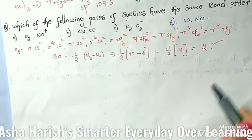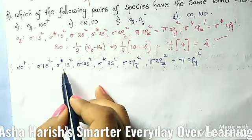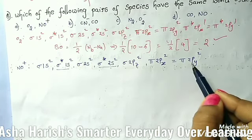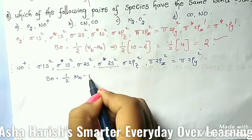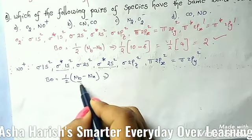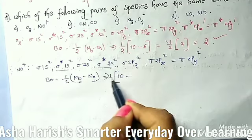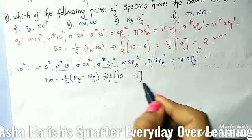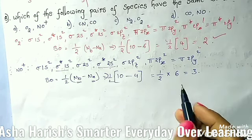For NO+, the electronic configuration is: σ1s², σ*1s², σ2s², σ*2s², σ2pz², π2px² = π2py². Bonding orbitals: 2, 4, 5, 6, 7, 8, 9, 10 — that's 10. Anti-bonding orbitals: 2, 4 — that's 4. Bond order = (10 - 4)/2 = 3. So NO+ has bond order 3. Let's move to option B — CN⁻.